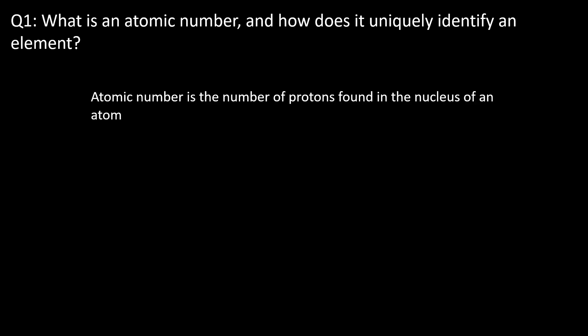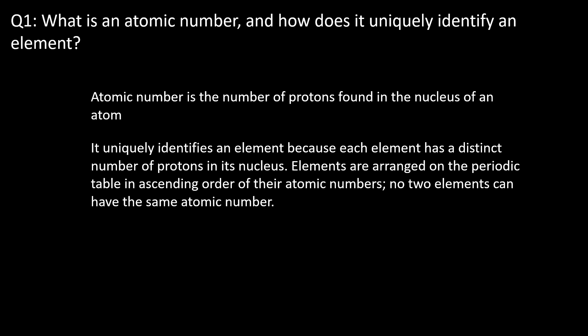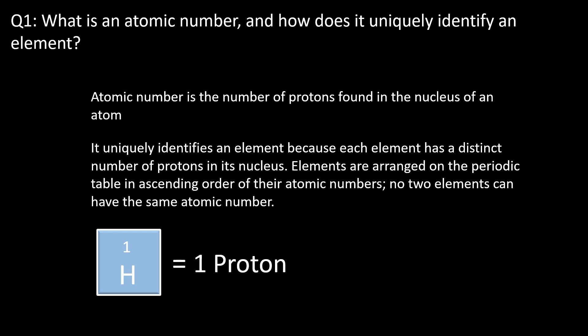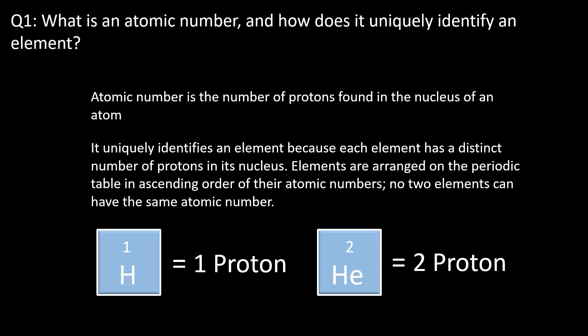Question one: what is an atomic number and how does it uniquely identify an element? An atomic number is the number of protons found in the nucleus of an atom. It uniquely identifies an element because each element has a distinct number of protons in the nucleus. These elements are arranged on the periodic table in ascending order of their atomic numbers and no two elements can have the same atomic number. For example, hydrogen has an atomic number of one indicating it has one proton, while helium has an atomic number of two signifying it has two protons.